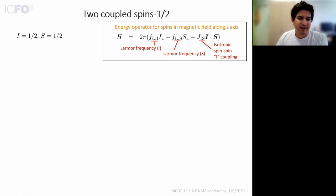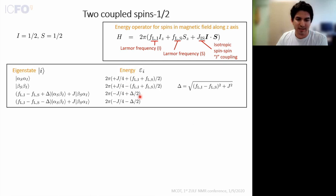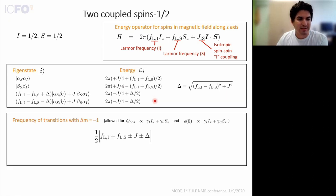We move on now to a spin-half pair, where things get much more interesting. In addition to Larmor frequencies from the Zeeman interaction, we have isotropic spin-spin J couplings. Repeating the quantum mechanical recipe, we get four spin states with energies that change non-linearly with magnetic field due to the term delta, defined as the vector sum of J and the difference in Larmor frequencies. The allowed transition frequencies look like the average Larmor frequency plus or minus J plus or minus delta.